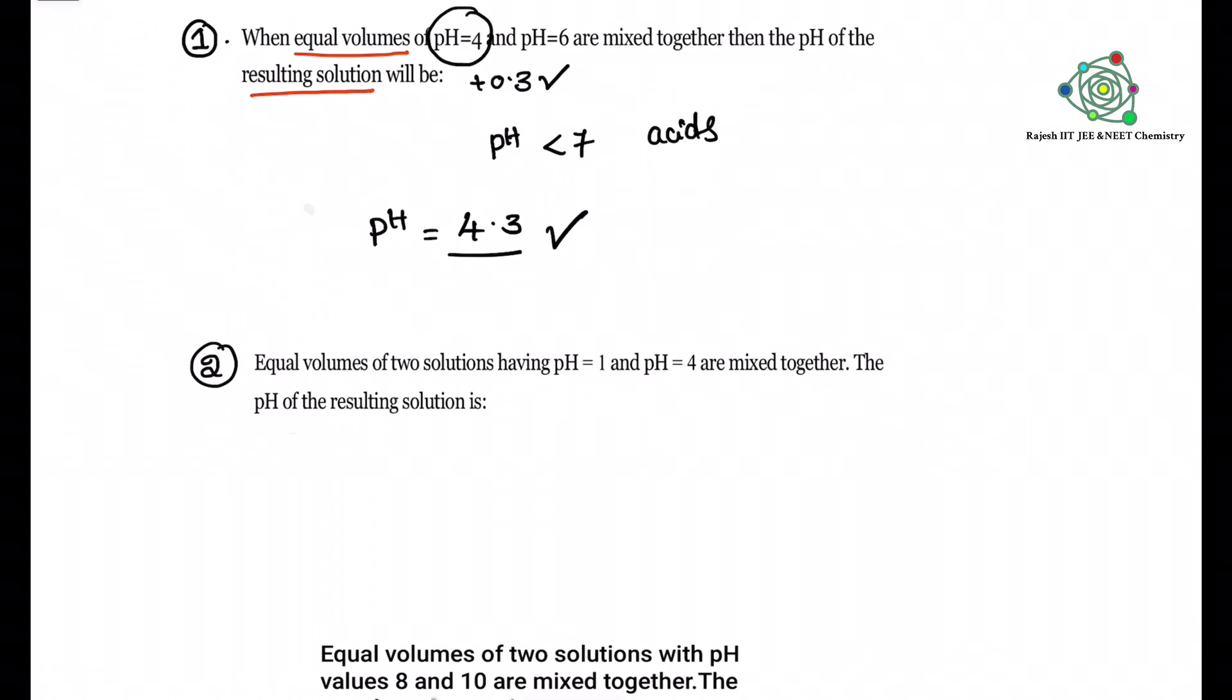Same trick we are going to apply here. Equal volumes of two solutions I am taking. One solution pH is 1, another solution pH is 4. What is the resultant solution pH?